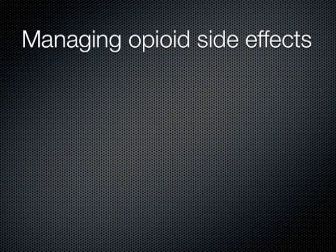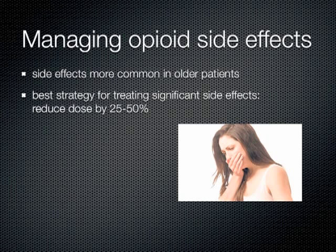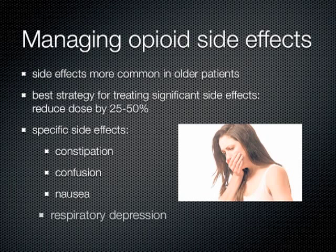Additional prescriptions may need to be written for the side effects that a patient experiences from taking opioids. Side effects will be more common in older patients. The best strategy for treating significant side effects is to reduce the dose by 25 to 50%. For constipation, a laxative or stool softener can be given. If a patient is confused, withhold further doses and possibly lower the dose or substitute it for a shorter-acting drug; also check for other potential causes of confusion like electrolyte abnormalities, hypoxemia, dehydration, or infection. For nausea, antihistamines, anticholinergics, and dopamine antagonist antiemetics can be used. Respiratory depression — classified as less than 8 respirations per minute and usually preceded by sedation — may be a sign of opioid overdose; in an emergency, naloxone is the best treatment.